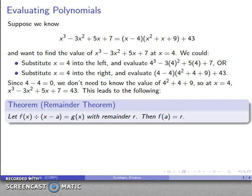And this is an example of what's called the remainder theorem. Suppose I take a polynomial and divide it by x minus a, and I get another polynomial, and I have my remainder. Then when I evaluate that polynomial at a, what I get is just the remainder all by itself.